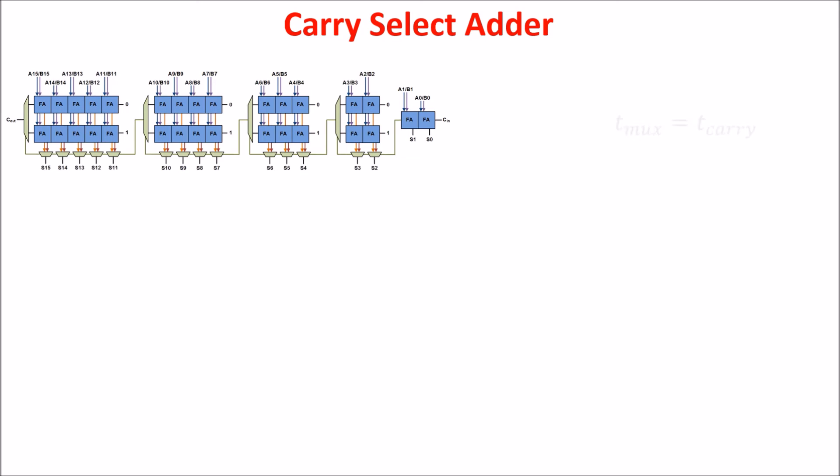We assume T-mux equals T-carry and we see that in the first block we have K bits, so N equals K plus another K bits in the second block plus K plus one bits in the third block and so on till the end of the blocks. In total, we have P blocks, so the last term of the numerical series is K plus P minus 2.